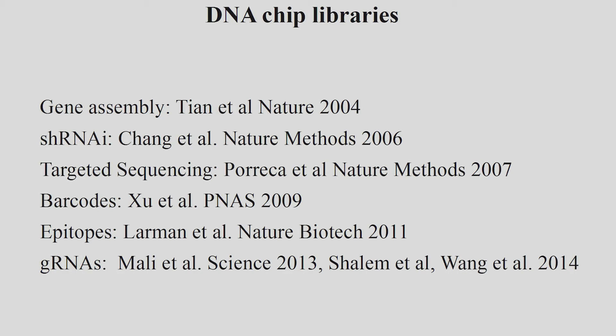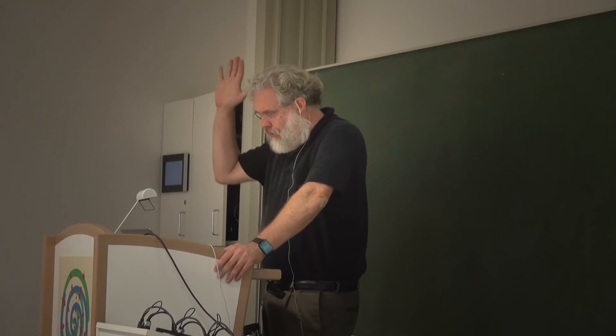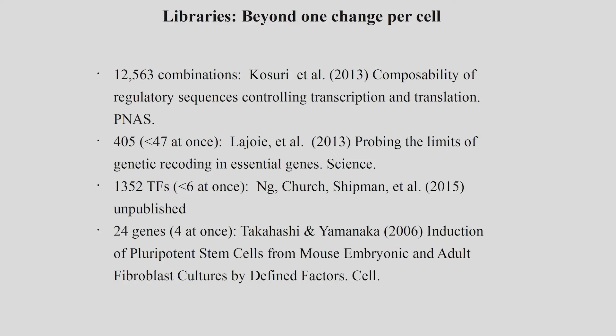Here are some successes with chip libraries. The first thing we did in 2004 was assemble operons — essentially ribosomal operons. Since then, Elledge and Hannon developed short hairpin RNAi, and many applications followed: targeted sequencing via hybridization selection, barcodes, epitopes, and guide RNAs. But what we're really pushing for now is not doing each of those libraries one thing at a time — each cell gets one — but getting more and more interested in combinations where we might do two, three, four, five, seven, or many combinations at once.